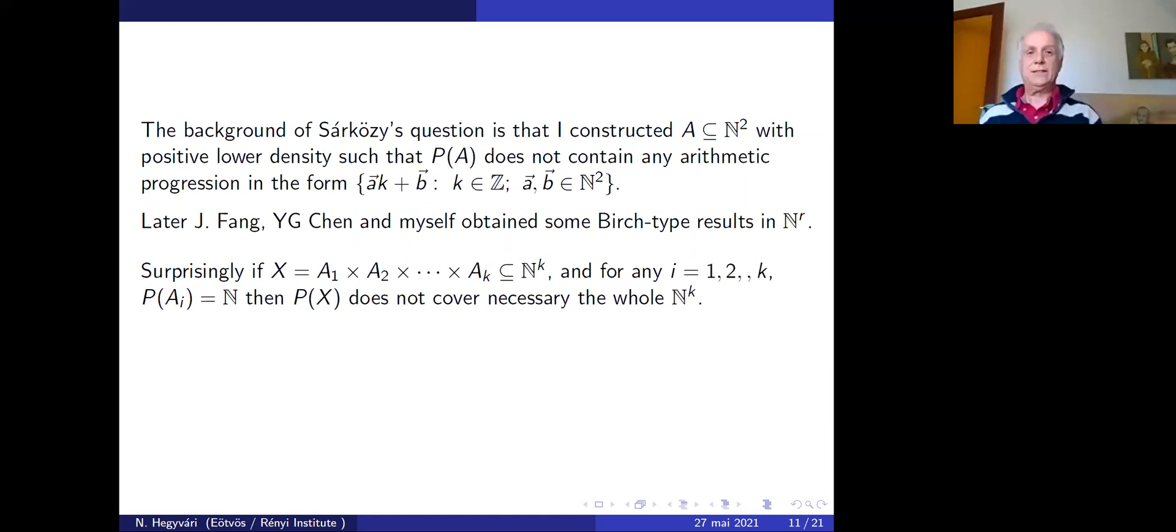Surprisingly, if you have a Cartesian product of A_1, A_2, through A_K where each A_i is complete, P(X) does not necessarily cover the whole integer lattice. For example, X is the Cartesian product of two powers, then the point (15, 1) does not belong while (15, 1) + (256, 0) belongs.